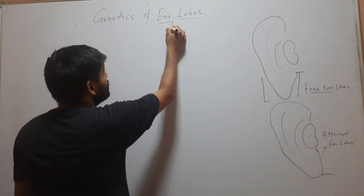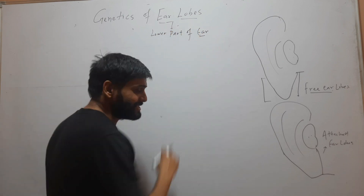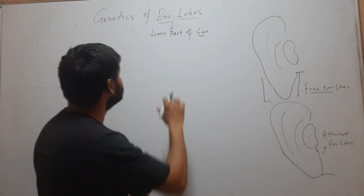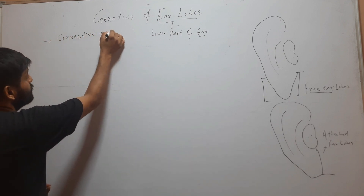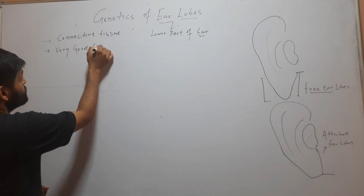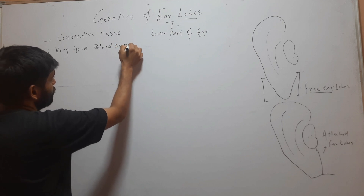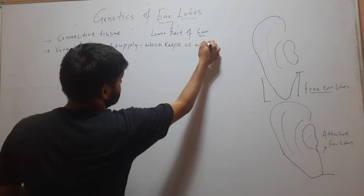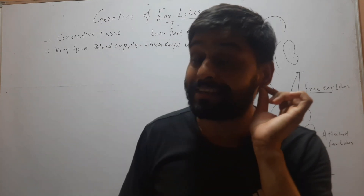What are ear lobes? Ear lobes are the lower part of the ear. This lower part is called the ear lobe. The ear lobe is made up of connective tissue and it has very good blood supply, which keeps us warm.